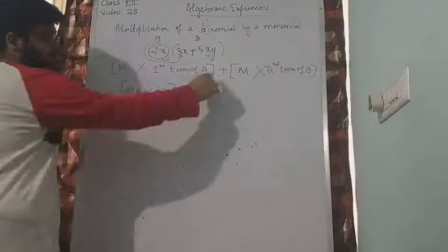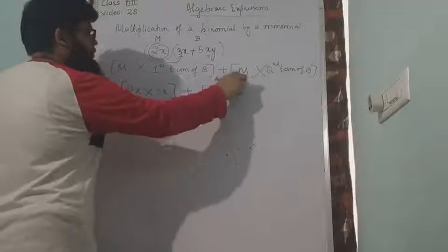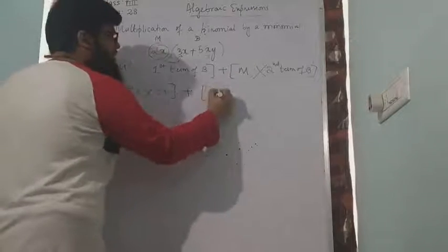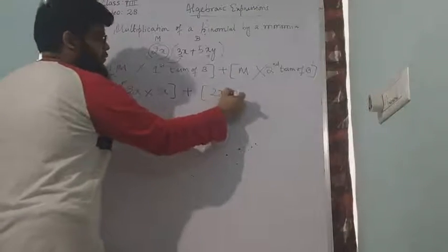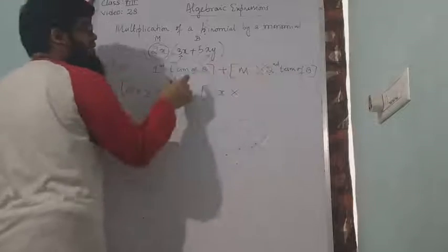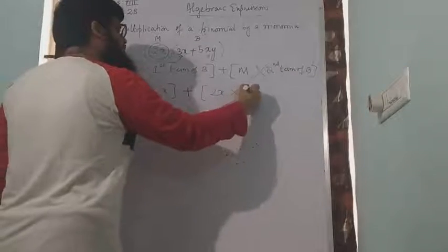Plus. There is plus sign. Monomial, again monomial is 2x into second term of binomial which is the second term of binomial, 5xy.